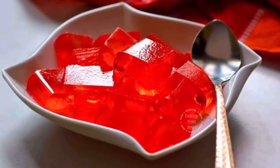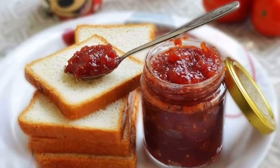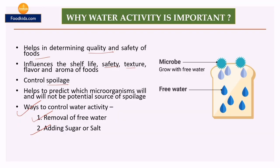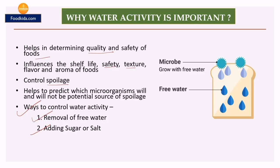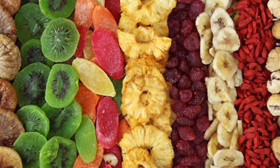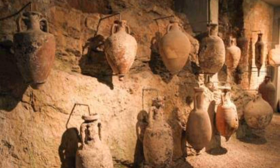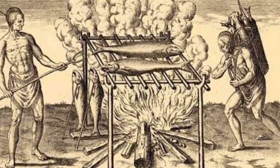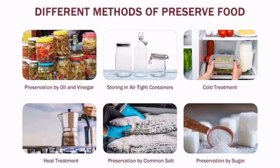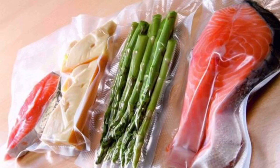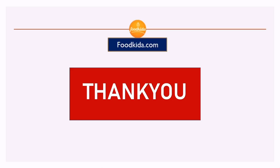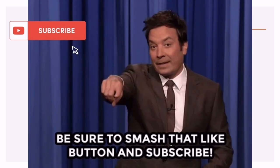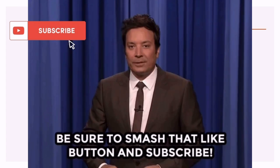For example, in jam and jelly, adding large amounts of sugar along with pectin binds free water and increases shelf life. A combination of techniques works even better — for example, amla candy is prepared by adding sugar and then drying, giving it a good shelf life. After understanding water activity, it helps us decide the method of preservation, packaging material, and shelf stability of a product, ultimately helping to design a safe, high-quality product with increased shelf life. Thank you for watching — please like, share, and subscribe to the channel.